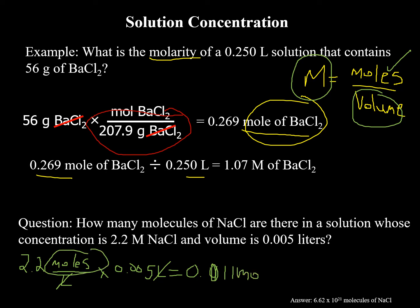We have the moles, and we're asked to find the number of molecules. To go from moles to molecules, we multiply by Avogadro's number, 6.02×10²³. That comes out to 6.62×10²¹ molecules.